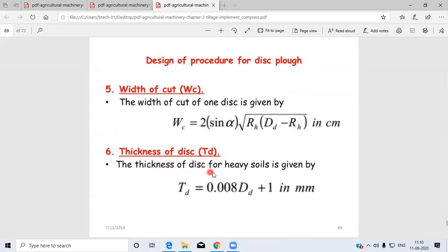Sixth is the thickness of the disc for heavy soil, given by Td = 0.008Dd + 1, measured in millimeters.